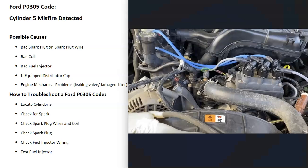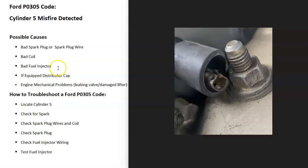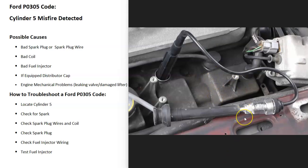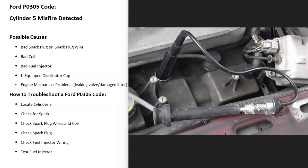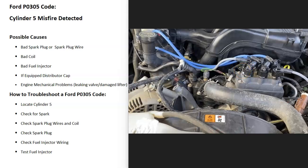One of the first things to do is check that you're getting spark. There are different methods — some people hold a spark plug wire very close to a ground and see if the spark jumps, but the best method is to use a spark plug tester tool. These are really low cost, usually less than ten dollars — I'll put a link down below if you need one. It goes in-line: one end goes to the spark plug, the other end goes to the wire. Start the vehicle and if it's getting spark, you'll see it sparking inside the tool.